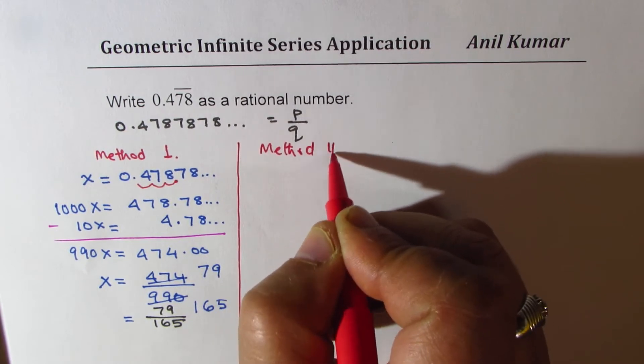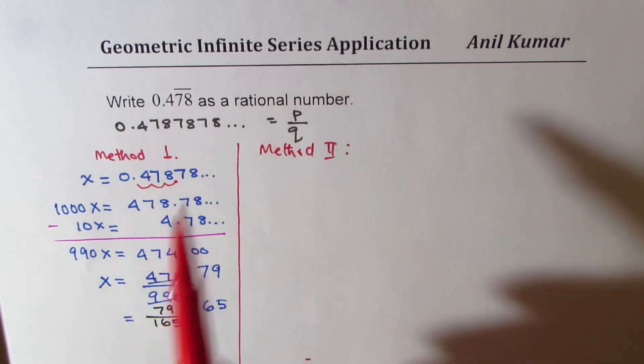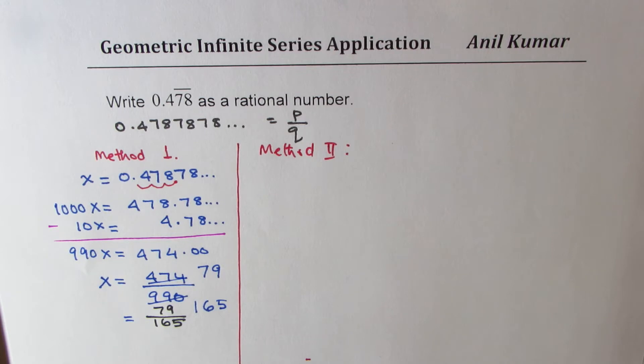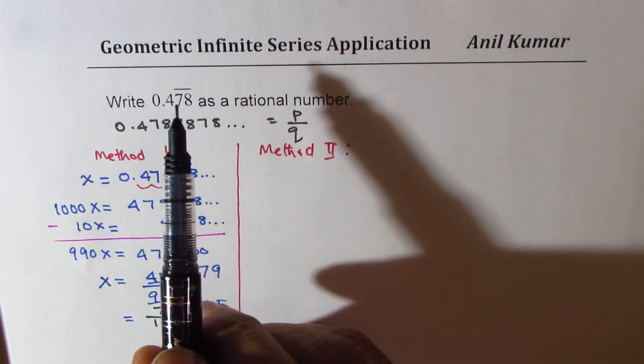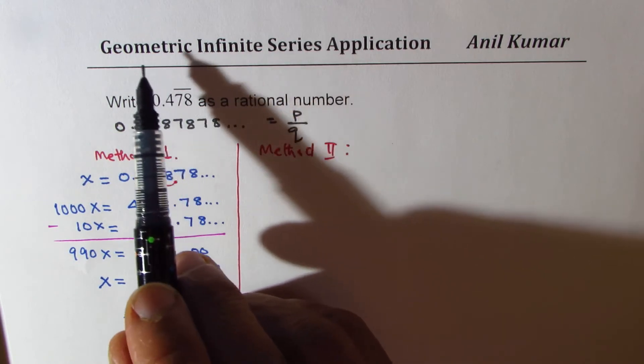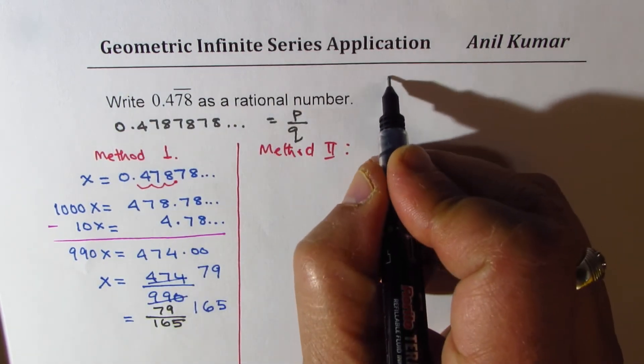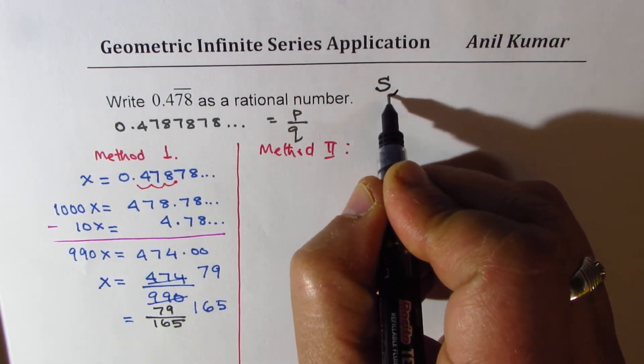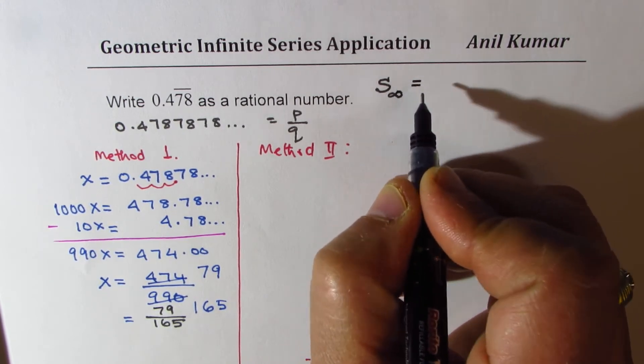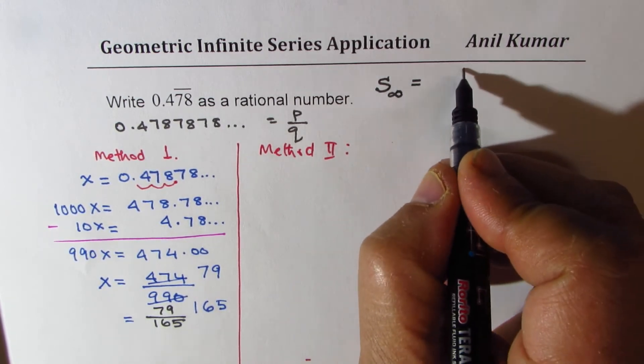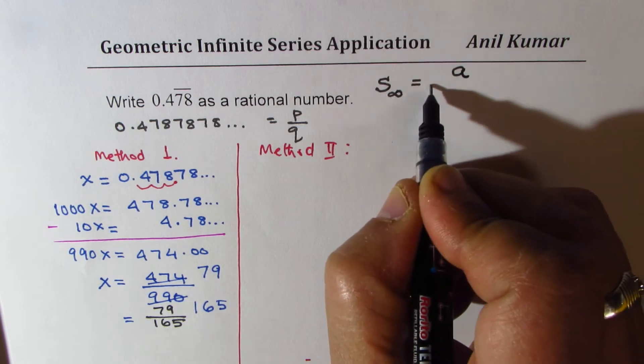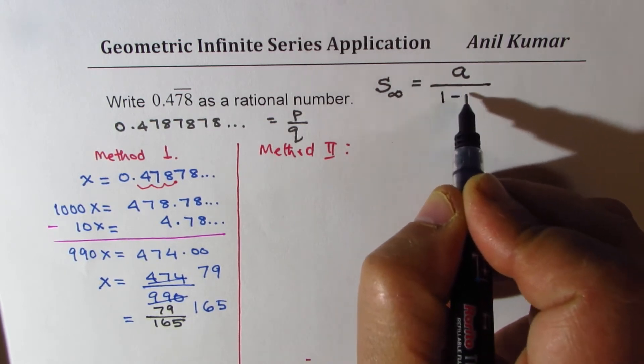The second method involves geometric series. Let's see how it involves geometric series. Let us remind you of the sum of geometric series. If there are infinite numbers to be added in a geometric series, then the sum equals the first number divided by 1 minus r.